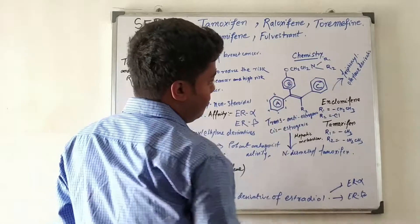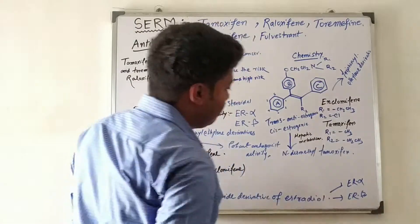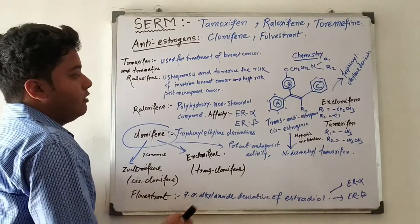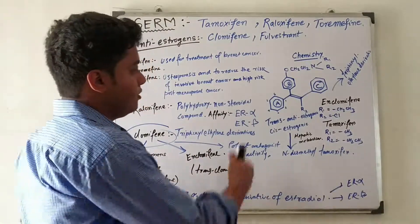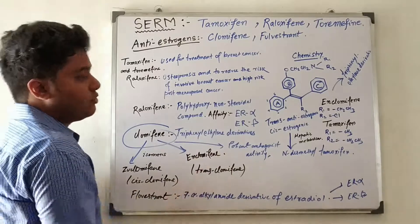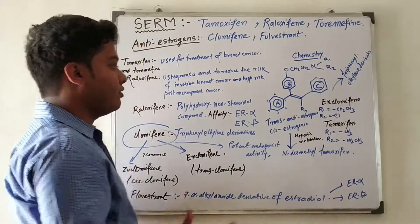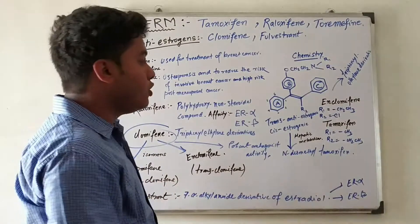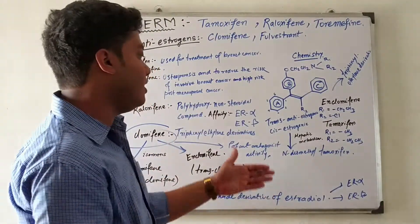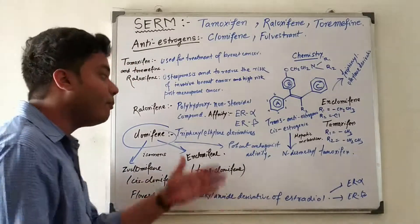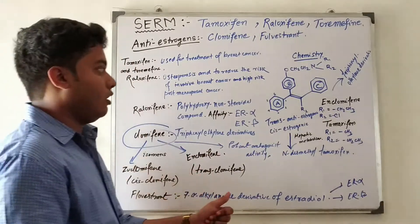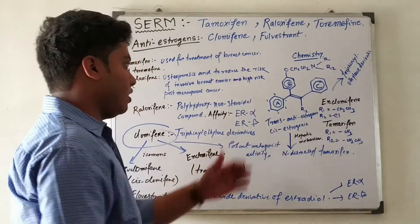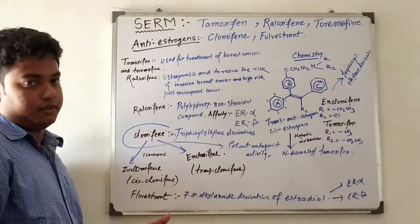For example, in the case of tamoxifen, the trans form has anti-estrogenic properties, while the cis form has estrogenic properties. Generally, tamoxifen undergoes hepatic metabolism to produce N-desmethyl tamoxifen and N-didesmethyl tamoxifen, which have comparable anti-estrogenic activity to tamoxifen itself.